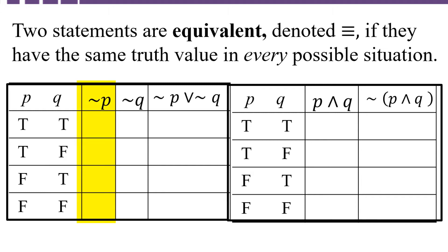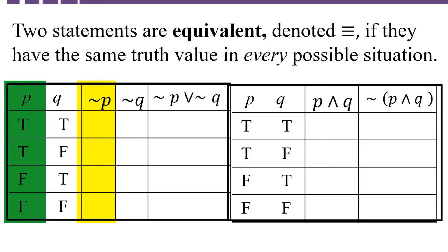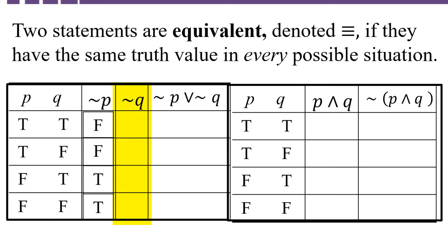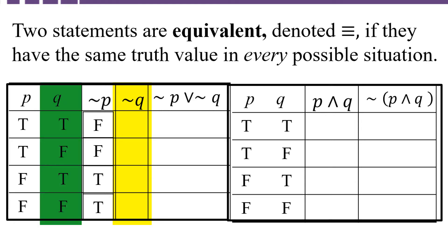First, we're going to negate P, which means take all the opposite truth values that the original statement P had. So we'll have false, false, true, true. And then we're going to negate Q, and Q has the truth values true, false, true, false. So not Q is false, true, false, true.